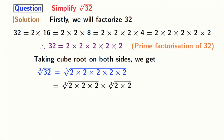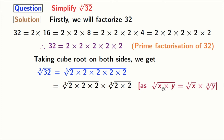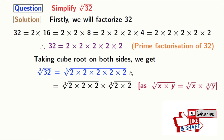After grouping, we get cube root of 2 times 2 times 2, times cube root of 2 times 2. We have used the rule that cube root of x times y is equal to cube root of x times cube root of y, where x is 2 times 2 times 2, and y is 2 times 2.